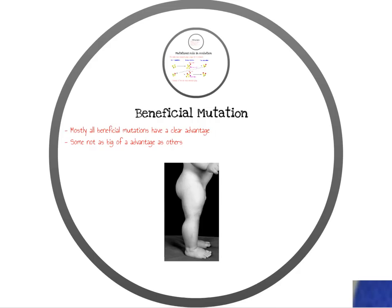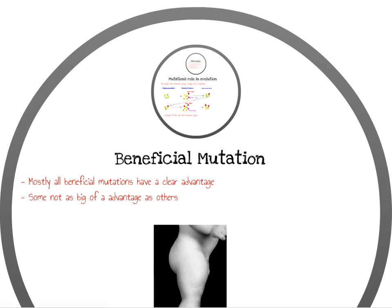An example of beneficial mutation is there was a child born in Germany nicknamed Baby Superman. He had a genetic mutation that boosts the growth of muscles. The boy's DNA was known to block a protein called myostatin that limits muscle growth. This is a great example of how mutation can be beneficial rather than making the human body disfigured.